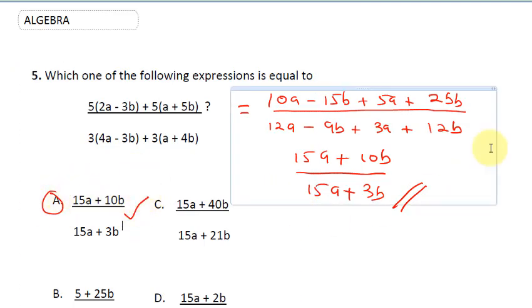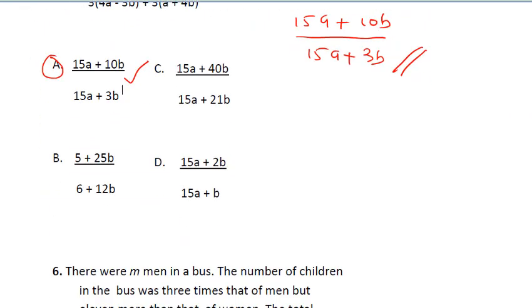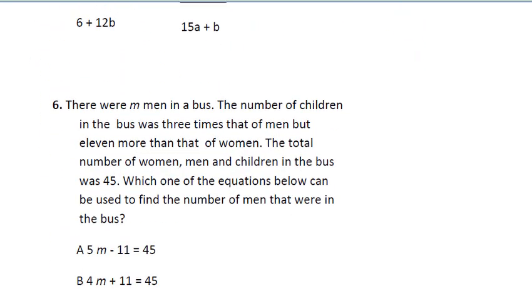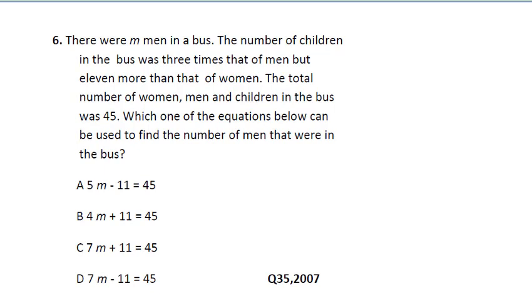Now Question 6, this is another algebra question. It says there were m men in the bus, so men equals m. The number of children in the bus was 3 times that of men, so children will be 3m. Now it says...